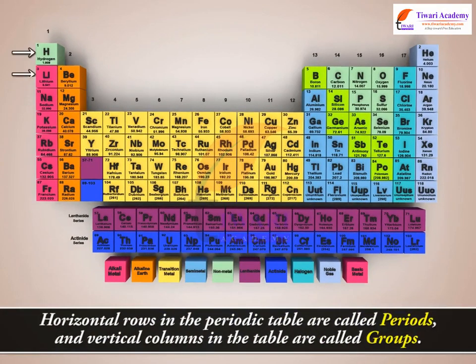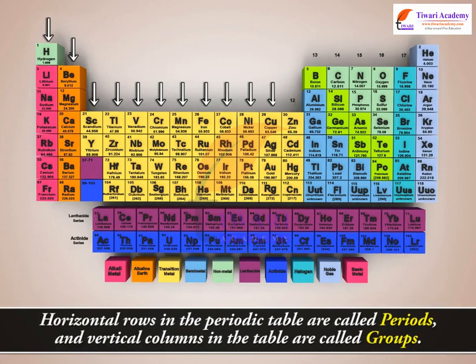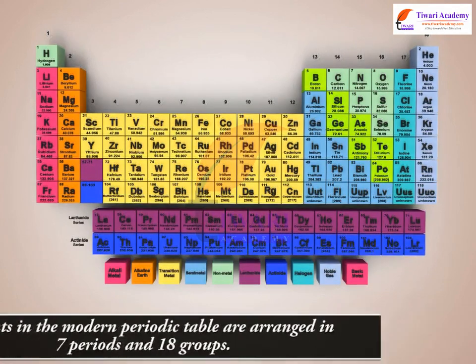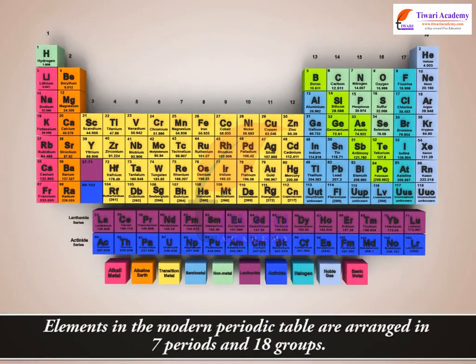Horizontal rows in the Periodic Table are called Periods, and vertical columns in the table are called Groups. Elements in the Modern Periodic Table are arranged in 7 Periods and 18 Groups.